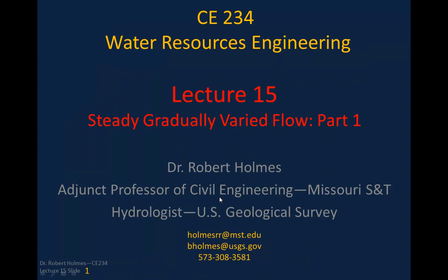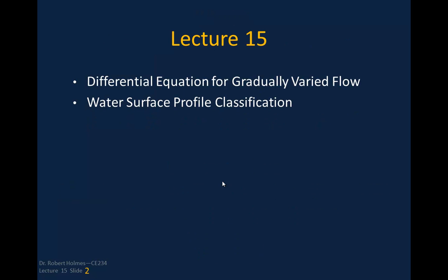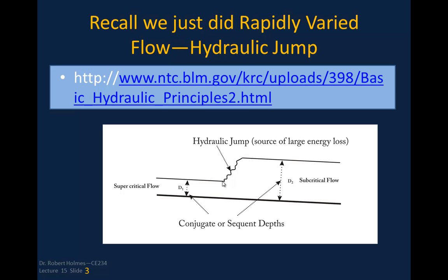This is lecture 15, where we're going to talk about gradually varied flow, and this is part one of it. I'm essentially going to talk about the differential equation for gradually varied flow, derive that, and then get into the process of water surface profile classification. As you recall from lecture 14, we discussed hydraulic jumps and the conjugate and sequent depths, which is known as rapidly varied flow. In this lecture, we're moving from rapidly varied flow to gradually varied flow, where the water surface profile changes much more gradually in terms of space.